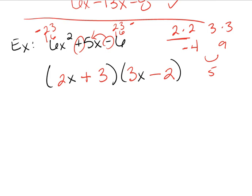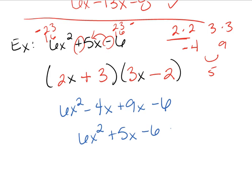Let's double check. Multiplying through, we get 6x squared minus 4x plus 9x minus 6. The middle terms combine, giving us 6x squared plus 5x minus 6.